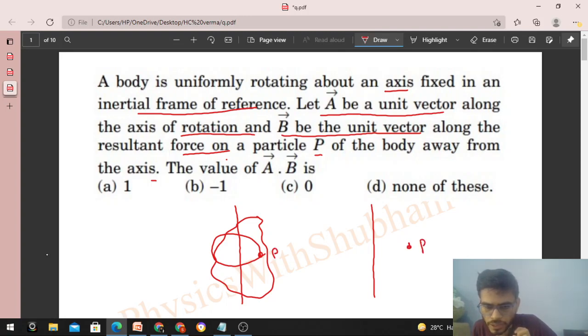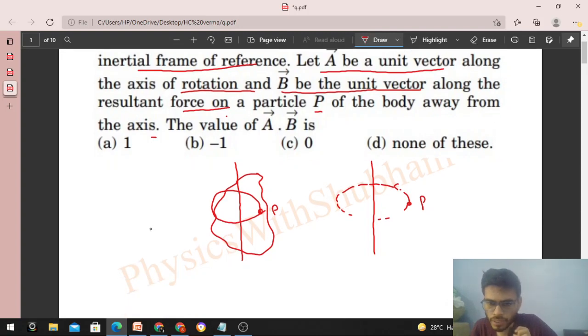Something like this. So if I draw the free body diagram of this particle, then you can see that we have circular motion in two perpendicular directions: one tangential direction and radial direction.